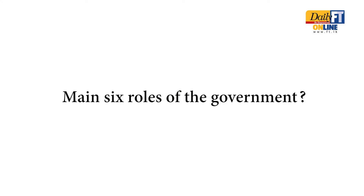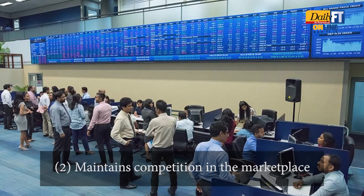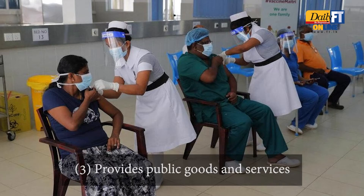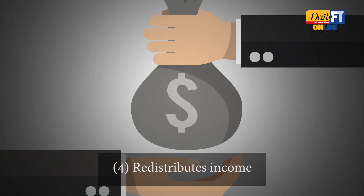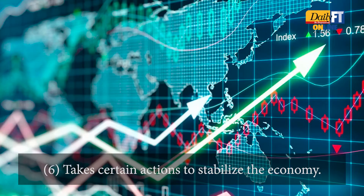Main six roles of the government: the government provides a legal and social framework within which the economy operates, maintains competition in the marketplace, provides the public with goods and services, redistributes income, corrects for externalities and takes certain actions to stabilise the economy.